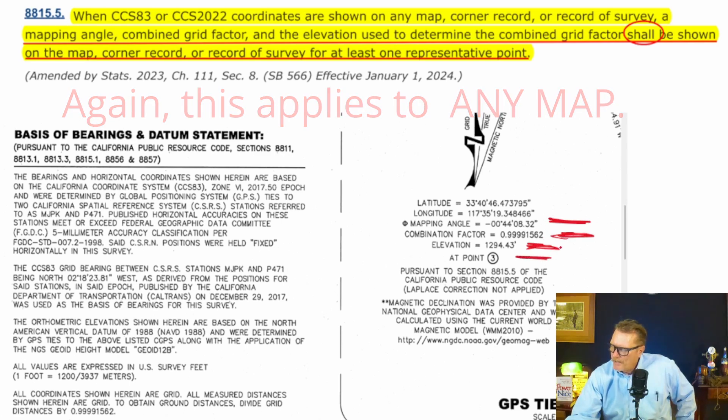You shouldn't use one of your core stations that are 30 miles away — it's not representative of your project. You should post-process this data down to your project and use a point that's on site. I want to address the use of coordinates on conveyance documents.